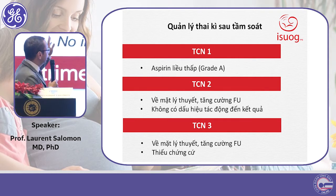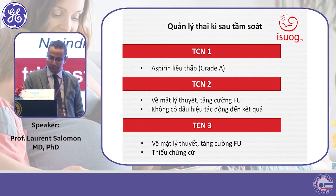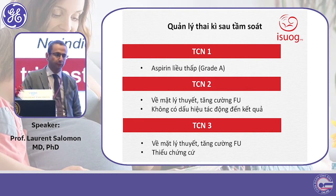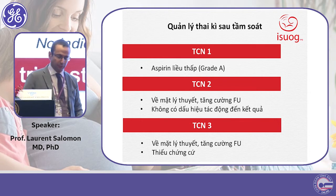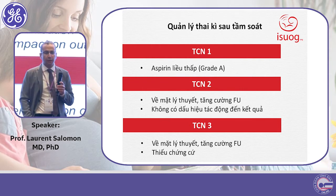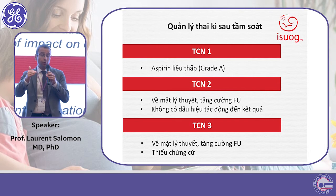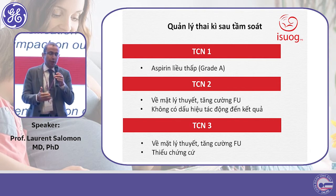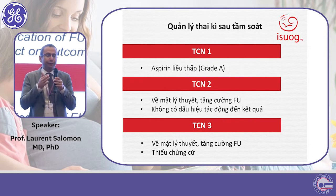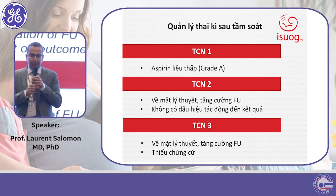After first trimester combined screening, you should start low dose aspirin. If you screen only in the second or even in the third trimester, you may decide to intensify the follow-up of the patient, but that is it — it is too late for prevention.